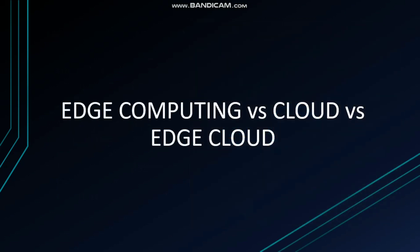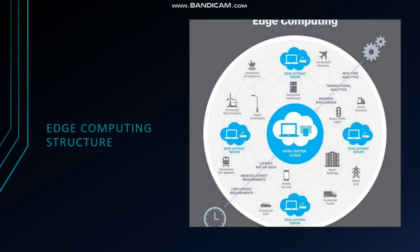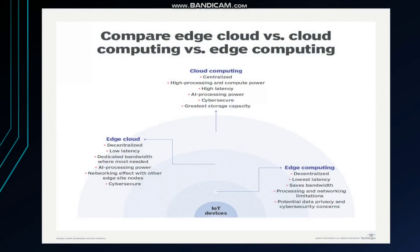Now let's look at edge computing versus cloud and edge cloud. If we take a look at this picture, they may look similar but they have differences. Cloud computing is centralized with high processing and compute power, high latency, AI processing power, cyber security, and the greatest storage capacity.